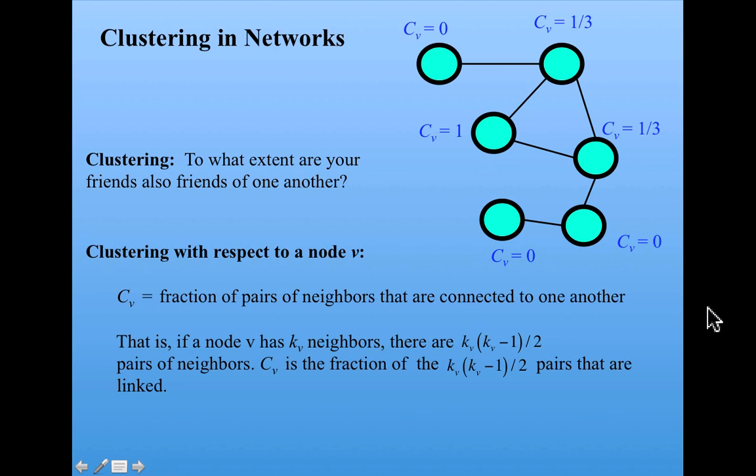And now we can define the clustering coefficient of the entire network, which is simply the average clustering with respect to each node. So the clustering coefficient is the average C_v over all nodes. So we add up these and divide by the number of nodes, and we get that the clustering coefficient is 0.278.